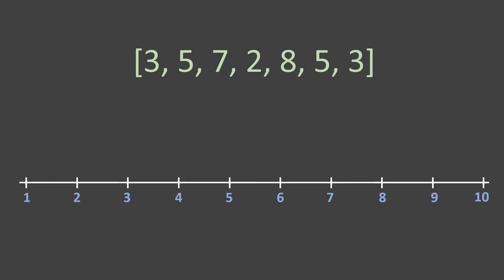Let's understand the significance of a strip plot and how it helps us. It is most likely a scatter plot, so what difference does it make? Let's say we have this set of numbers and we have the axis. Now we have to plot these numbers on this axis — first we start with three, plot it, then five.